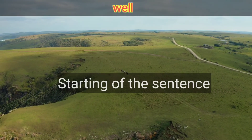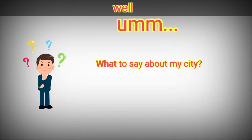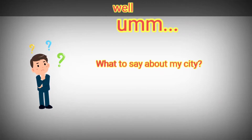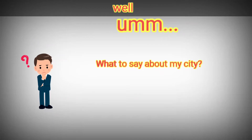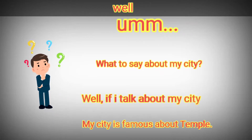Let me give an example for clear understanding. If somebody has asked you to tell something interesting about your city, then what will you answer? At that time you will get confused and start to say, 'Oh, what to say about my city?' Here I'm going to suggest you: rather than getting confused, start by saying, 'Well, if I talk about my city, my city is famous for its temples.'